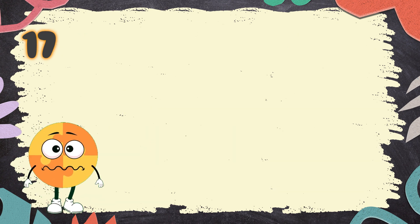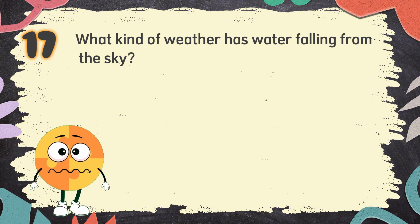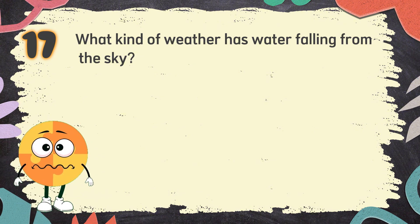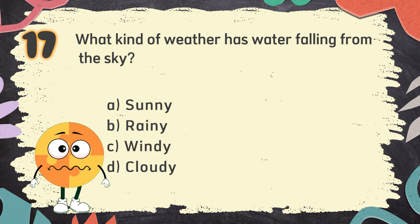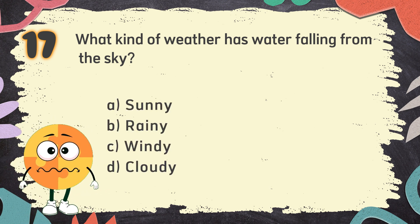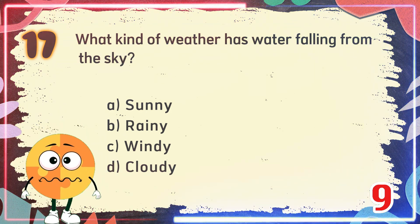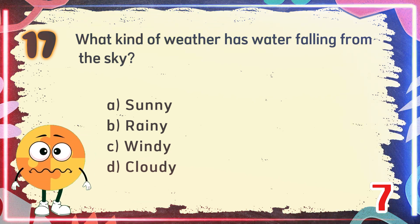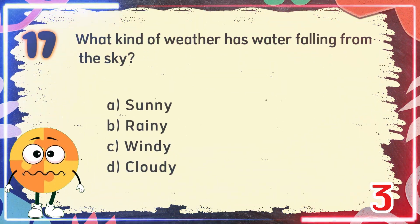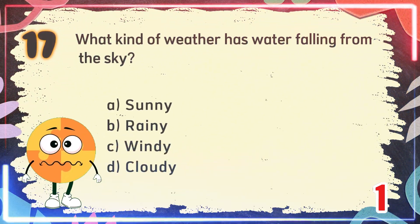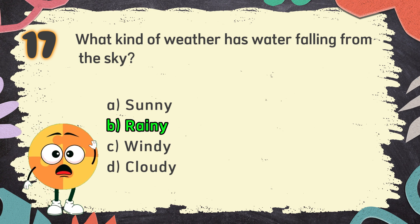Number 17: What kind of weather has water falling from the sky? The choices are: A. Sunny, B. Rainy, C. Windy, D. Cloudy. The correct answer is B. Rainy.